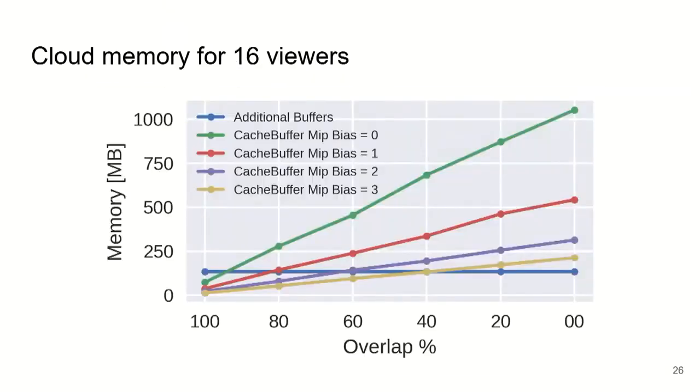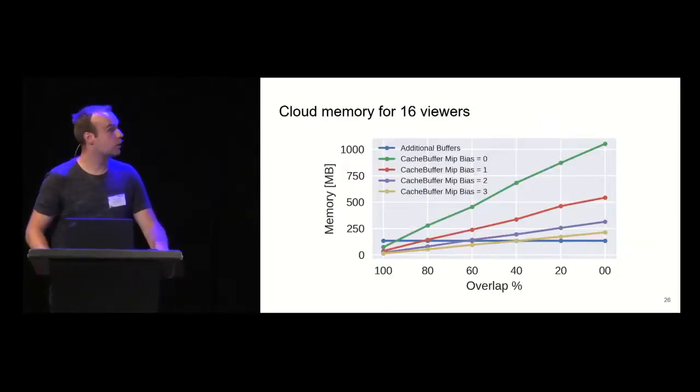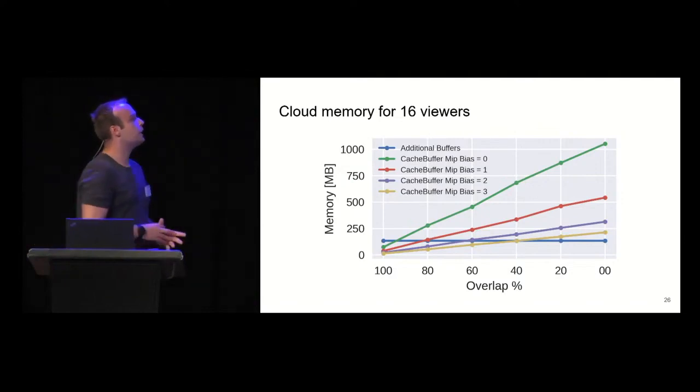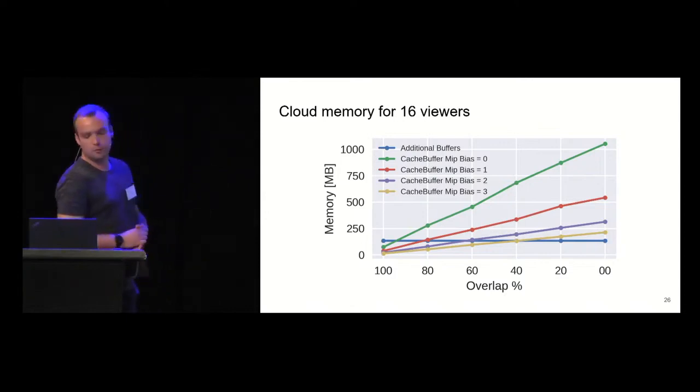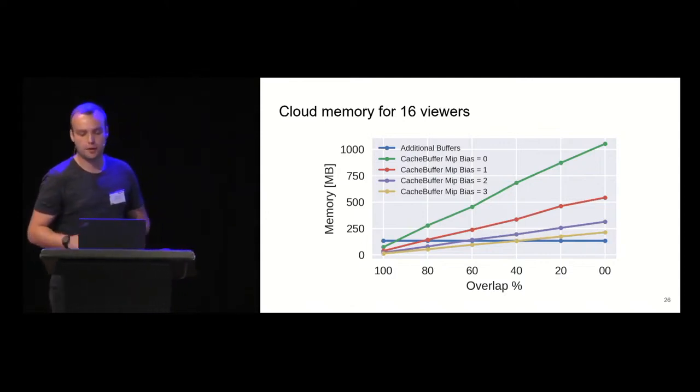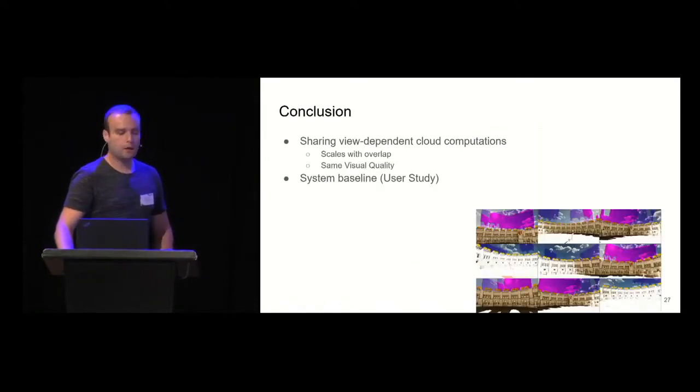In terms of memory, you can see the memory for 16 viewers. In a worst case scenario with unbiased caches, we use with the additional buffers like 1.3 gigabytes, which is usually not a problem even on consumer GPUs. As you increase the mip-bias, the memory will half basically and will linearly decrease with the overlap percentage you achieve in your application.